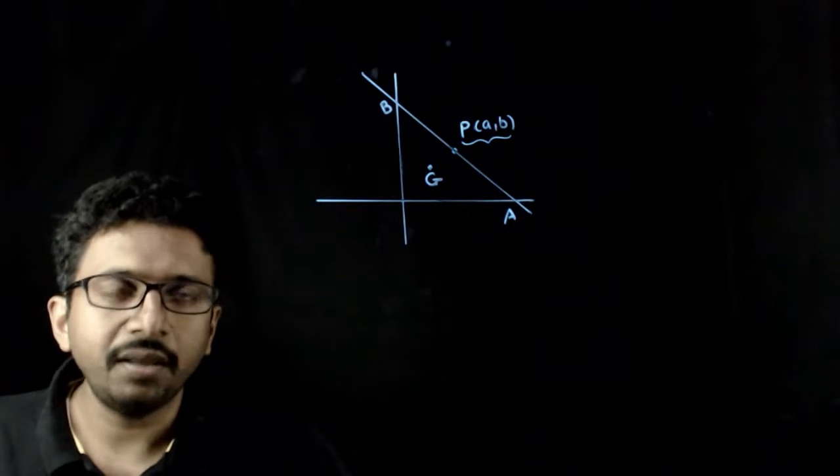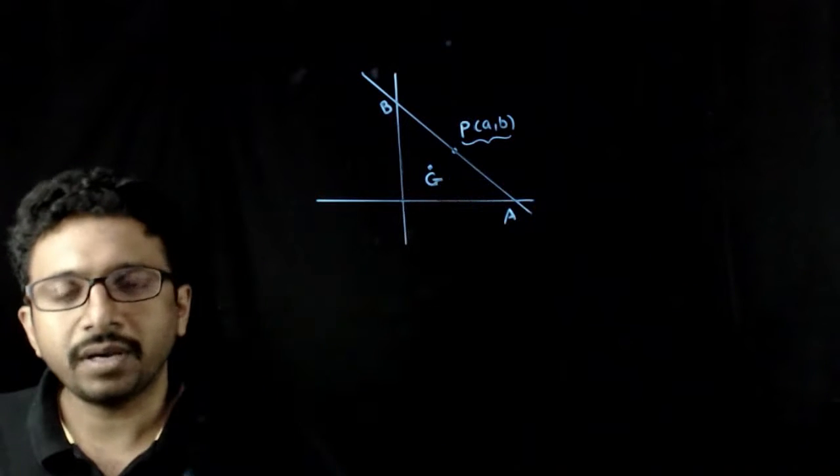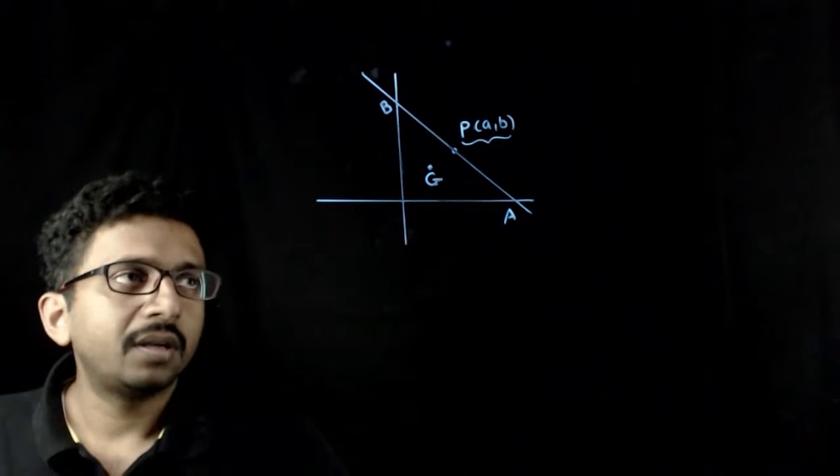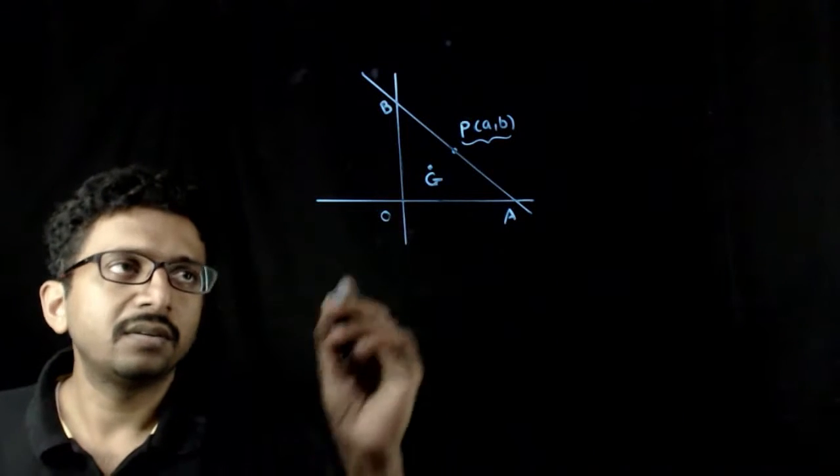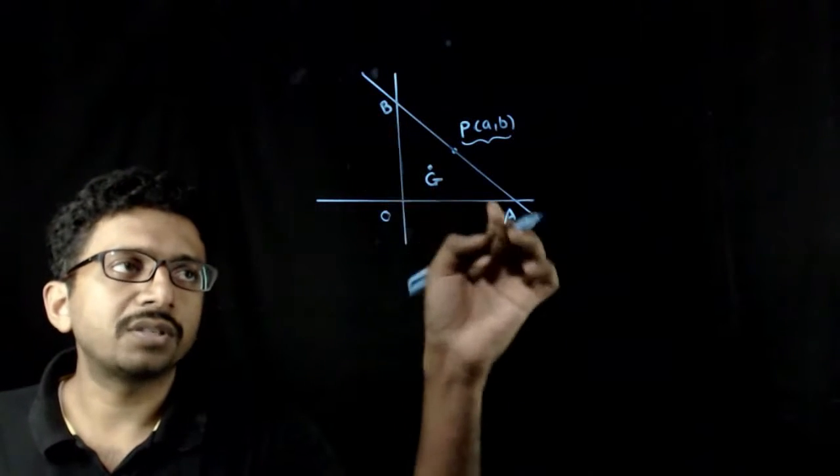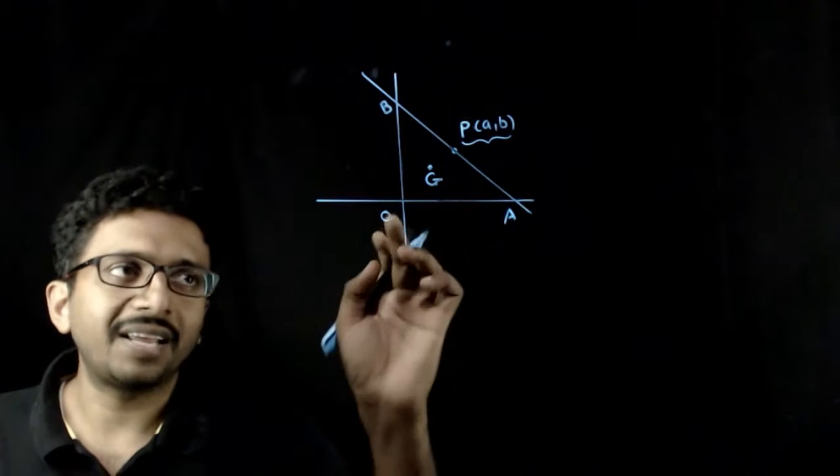The variable straight line passes through the point a comma b and the line intersects the coordinate axes at A and B. If that is so, what is the locus of the centroid of triangle OAB?